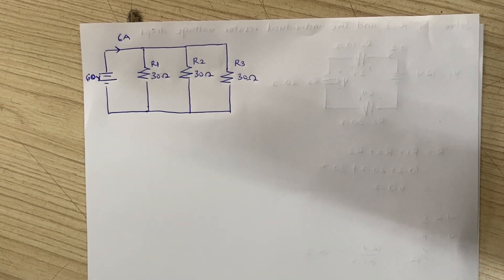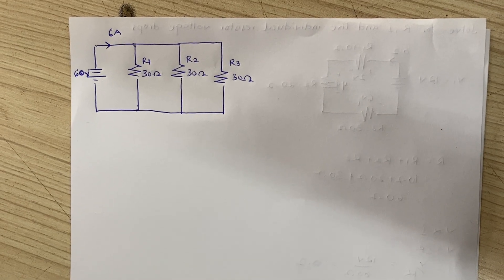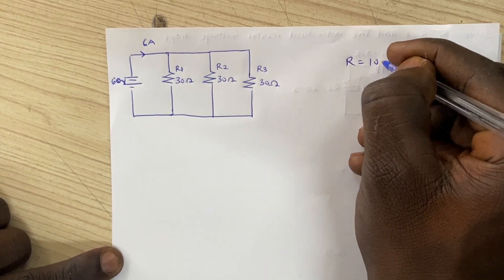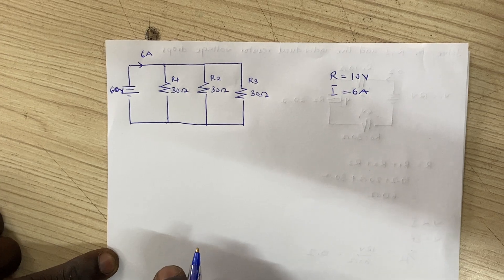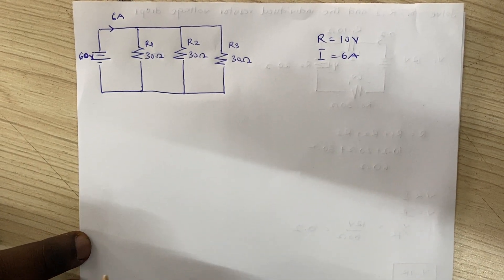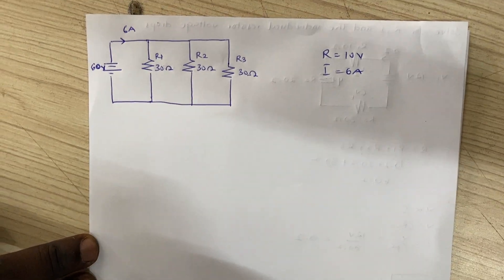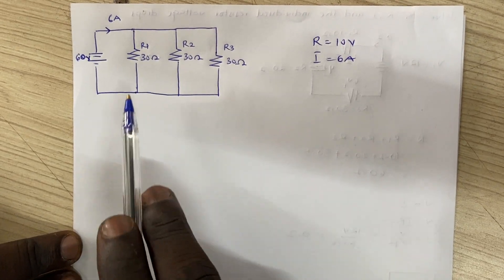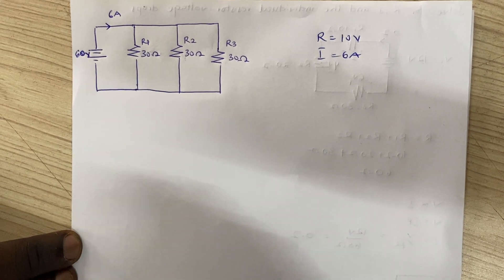Good day ladies and gentlemen, welcome to Bright Engineering. In our last video we talked about parallel circuits and found our equivalent resistance R, our voltage was 10 volts, and our current is 6 amps. Now we need to find the current that flows through every resistor. Unlike series circuits, in parallel the same current does not flow through each resistor. We are going to look at the concept of current divider rules.